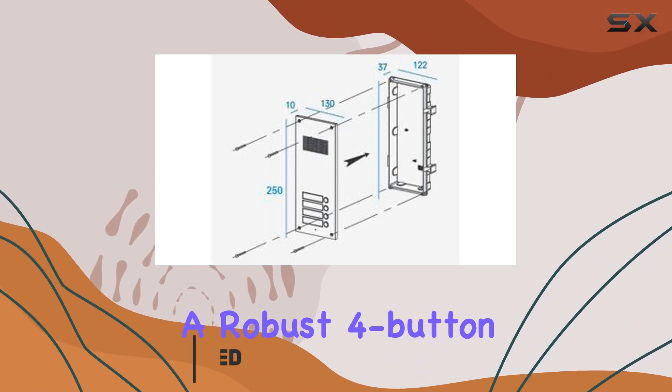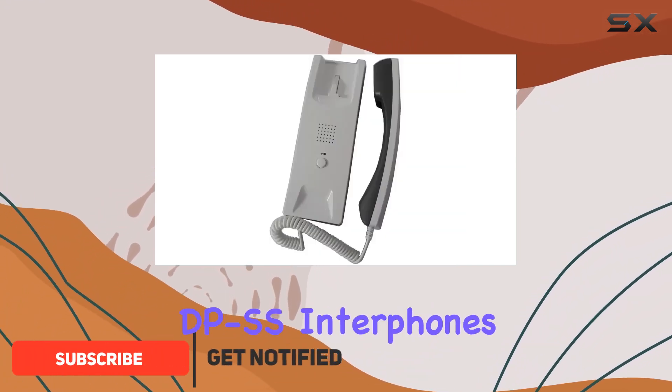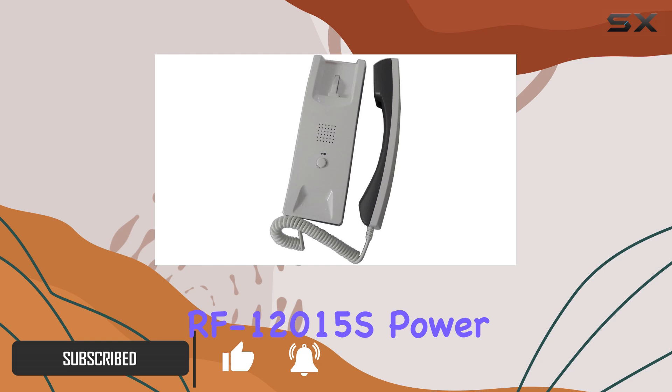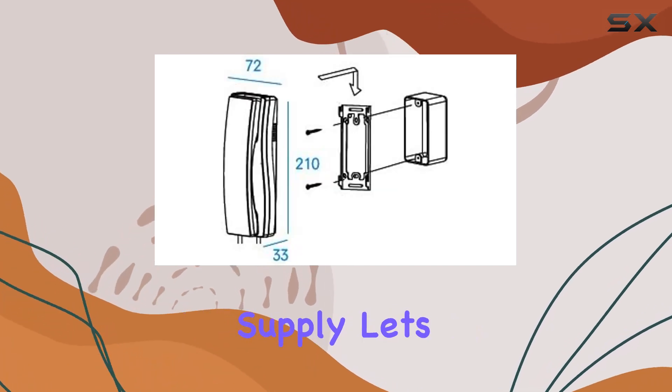This system includes a robust four-button lobby unit, four DPSS interphones, and a reliable RF-12015S power supply.